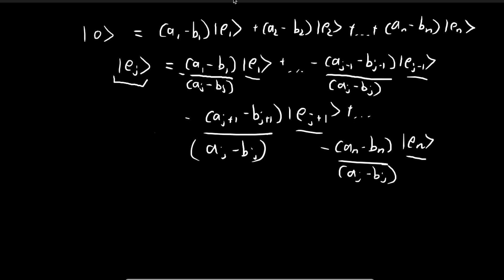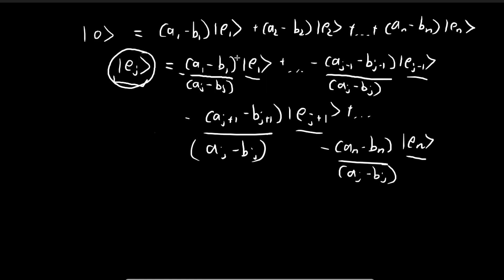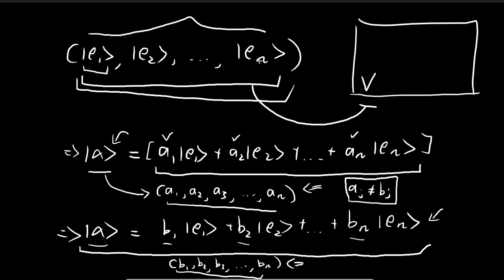This means the set of basis vectors is not linearly independent, since we've expressed ej as a linear combination of all the other vectors. But we started by assuming this set forms a basis, which requires all vectors to be linearly independent. This is a contradiction. Therefore, our assumption was false — it is not possible to find an alternate set of scalars to obtain alpha, proving that the set of scalars is unique.